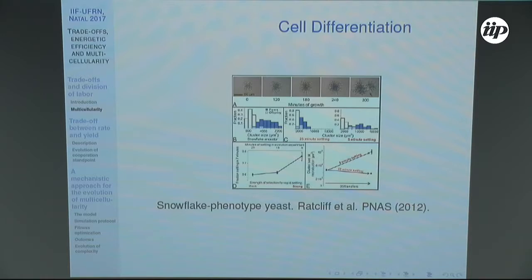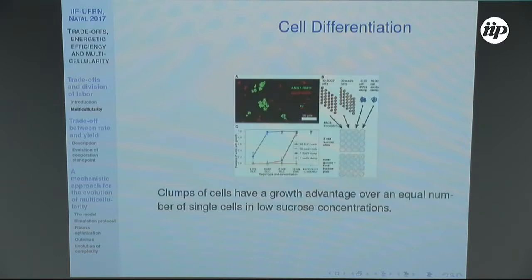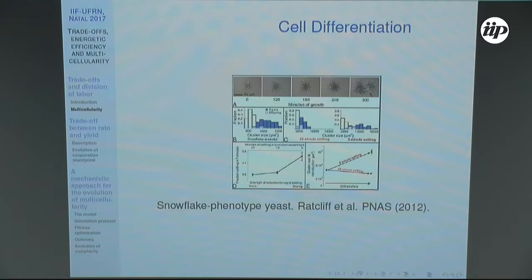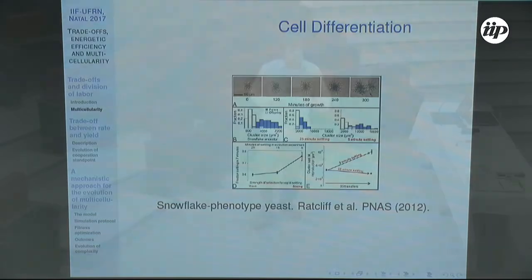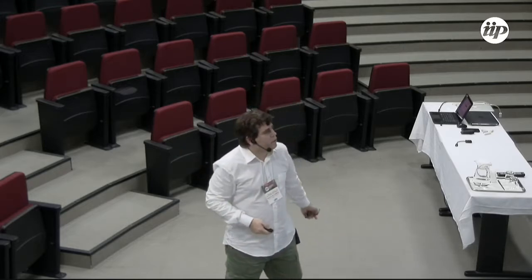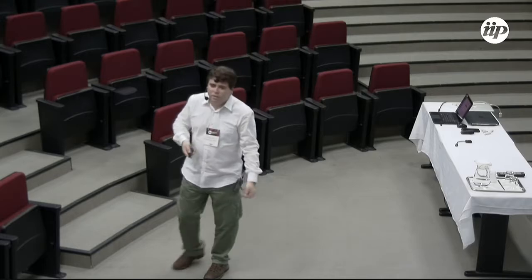Today it's possible to produce multicellular organisms in the lab starting from single cells. We have lab experiments with yeast where multicellular organisms form a snowflake-like branching structure. Interestingly, division of labor is not present in the beginning, but after reaching a given size, differentiation starts and some cells develop apoptosis — they kill themselves. The advantage is that this allows the aggregate to replicate faster, a kind of kin selection.